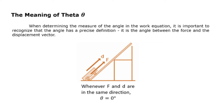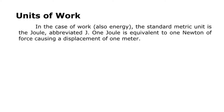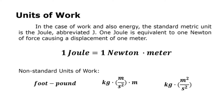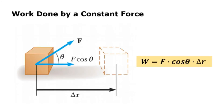When determining the measure of the angle in the work equation, it is important to recognize that the angle has a precise definition — it is the angle between the force and the displacement vector. In the case of work and also energy, the standard metric unit is the joule, abbreviated J. One joule is equivalent to one newton of force causing a displacement of one meter; in other words, one joule equals one newton-meter. There are also non-standard units of work such as foot-pound, kilogram-meter per second squared times meters, and kilogram-meter squared per second squared. The work done by a constant force is the product of the component of the force in the direction of motion and the magnitude of the displacement.